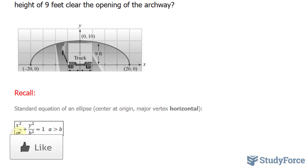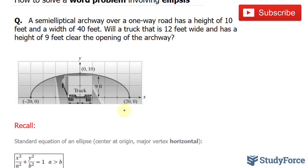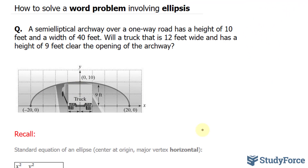So you have x squared over a squared plus y squared over b squared. In order for you to have an ellipse that is longer horizontally than it is vertically, your a term needs to be bigger than your b term. Going back to the question, the archway is 40 feet wide. If we center it at the origin, the distance across is 40 and the height to the top is 10, so a equals 20 and b equals 10.